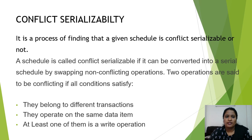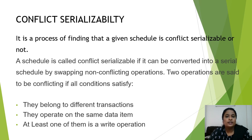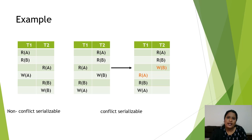Conflict Serializability is the process of finding whether a given schedule is Conflict Serializable or not. A schedule can be called Conflict Serializable if it can be converted into a Serial Schedule by swapping Non-Conflicting Operations. Two operations are said to be conflicting if they satisfy all three conditions: they belong to different transactions, they operate on the same data item, and at least one of them is a write operation.